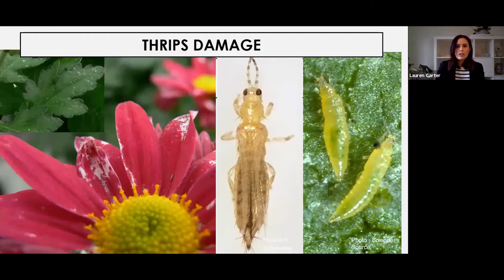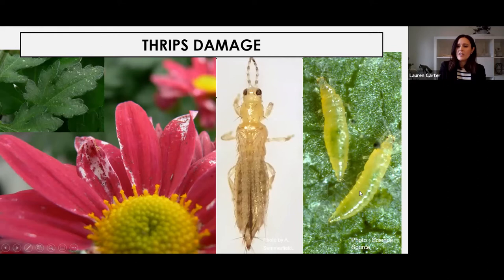I'm sure a lot of you don't need a lesson on thrips damage. Basically, what they do is they suck out the contents of cells, and then they also poop out the extra contents like chlorophyll. So you get this nice streaking where they've taken out the color and then black poop on top. This is what an adult looks like, and these banana shapes are the larvae.